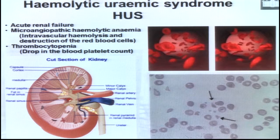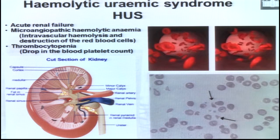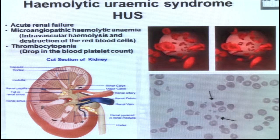One reason for choosing this organism is the severe sequela hemolytic uremic syndrome, which is a life-threatening disease characterised by a triad of acute renal failure, microangiopathic hemolytic anemia — where the red blood cells are fragmented — increased risk of blood clotting, and thrombocytopenia, which is a drop in the blood platelet count.